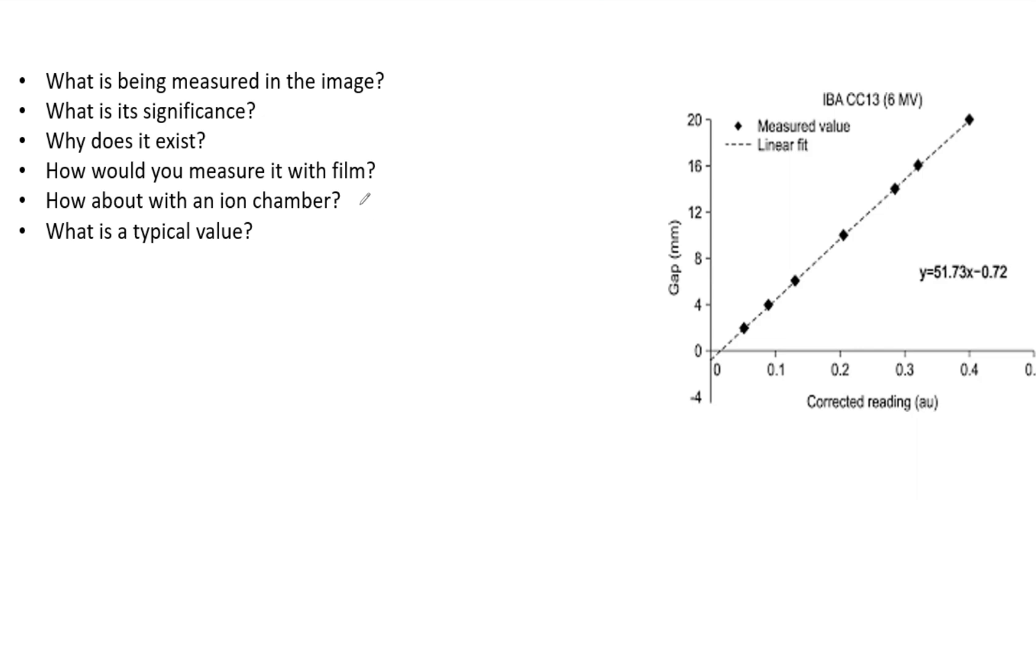How about with an ion chamber? With an ion chamber, you want to expose an open field and then uniform fields made with sliding the MLC with varying leaf width, repeating this and then plot the reading versus the gap, find the value at zero by extrapolating again, and that absolute value is the DLG. What you see here with the corrected reading should clue you in that this DLG was determined by an ion chamber.